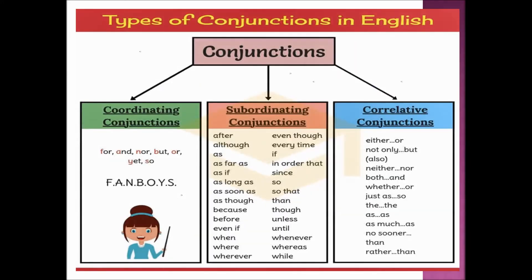Next, we are going to learn about types of conjunctions in English. Conjunctions are classified into three types: coordinating conjunctions, subordinating conjunctions, and correlative conjunctions. The coordinating conjunctions are: for, and, nor, but, or, yet, and so.